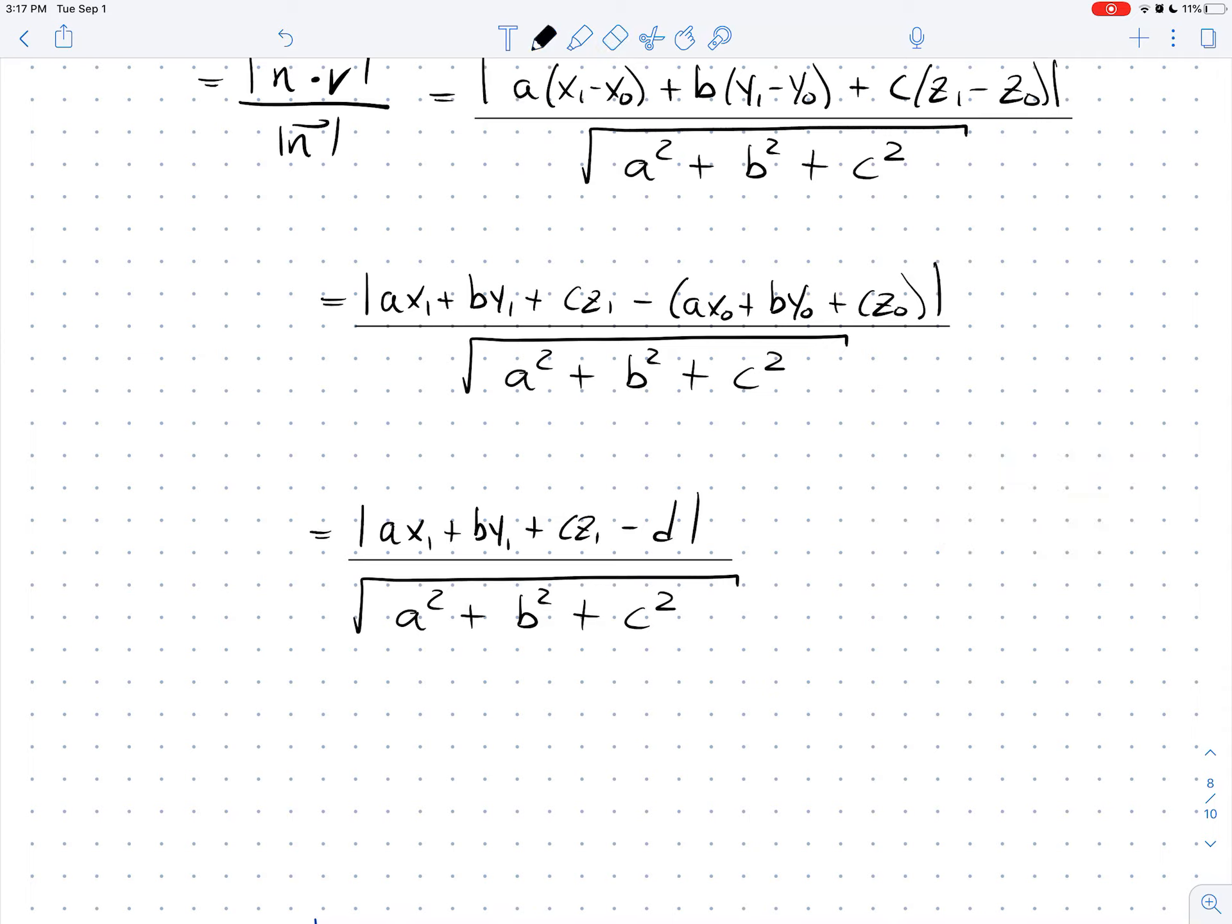So that's the formula. So this is the distance formula for the distance between a point, X1, Y1, Z1, and a plane, AX plus BY plus CZ equals D. And that's how you do it.